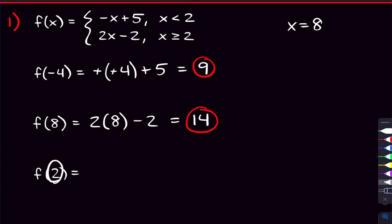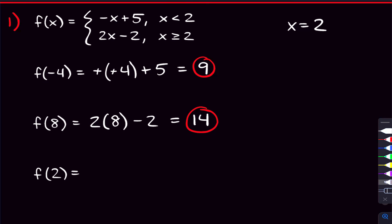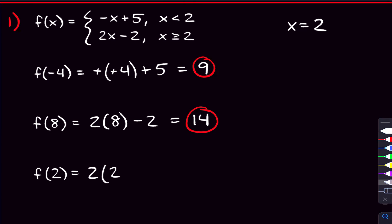Lastly, we have f of two, where x equals two. Looking at our conditions — two appears in both, but in only one can x actually equal two. In the first condition, x can only be less than two, it can't equal two. But in the second condition, x can be greater than or equal to two — that little bar underneath the greater than sign means 'or equal to.' So x being two works with the second condition, and we use two x minus two. Plugging in two: two times two minus two equals four minus two, which is two.